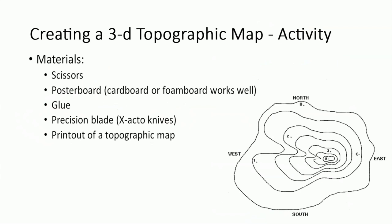Now that we are somewhat familiarized with topographic maps, you will try your hand at creating a 3D topo map. For this activity, you will need a pair of scissors, a poster board, glue, an exacto knife or a precision blade, and a printout of a topographic map of your choosing. It is best to select a map that has somewhere between 7 and 10 contours. More contours will give your 3D map more definition, but it may be difficult to cut out the smaller contour areas and it will take a little bit more time as well.